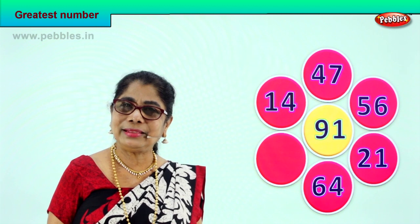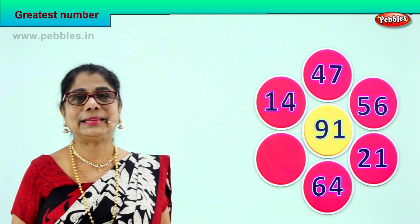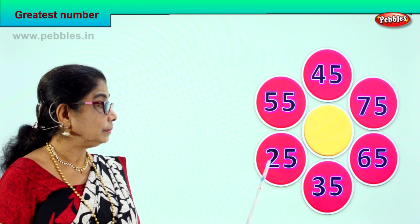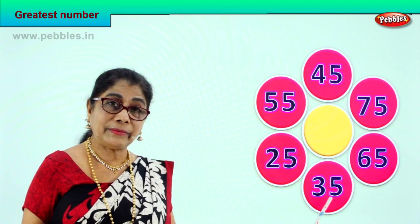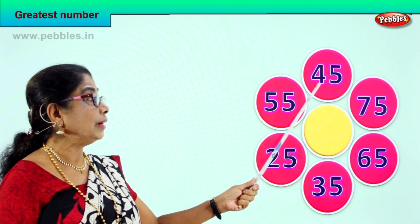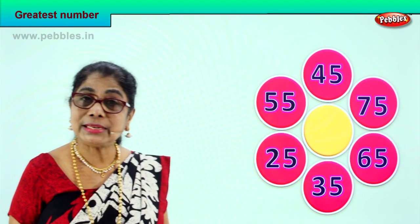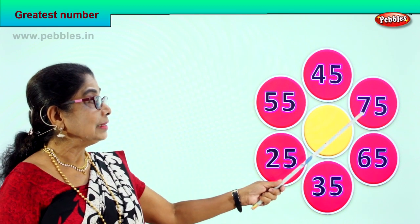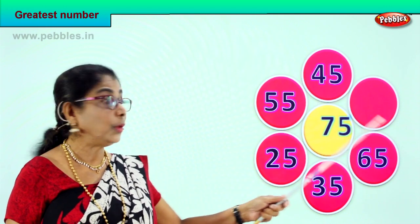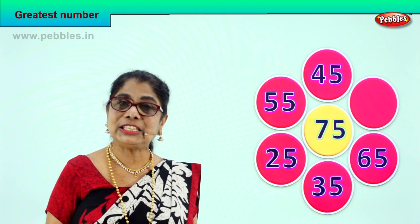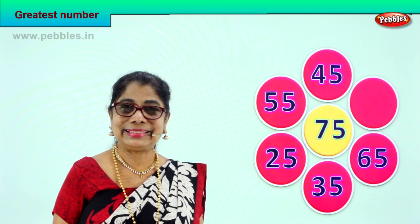Isn't it very interesting identifying the greatest number? Let's go on to the next exercise. 55 has 5 tens. 25 has 2 tens. 35 has 3 tens. 65 has 6 tens. 75 has 7 tens. 45 has 4 tens. Among these numbers, which number has the highest number of tens in the tens place? Certainly — 75! 7 tens and 5 ones. 75 is the biggest number of all because there is 7 in the tens place.